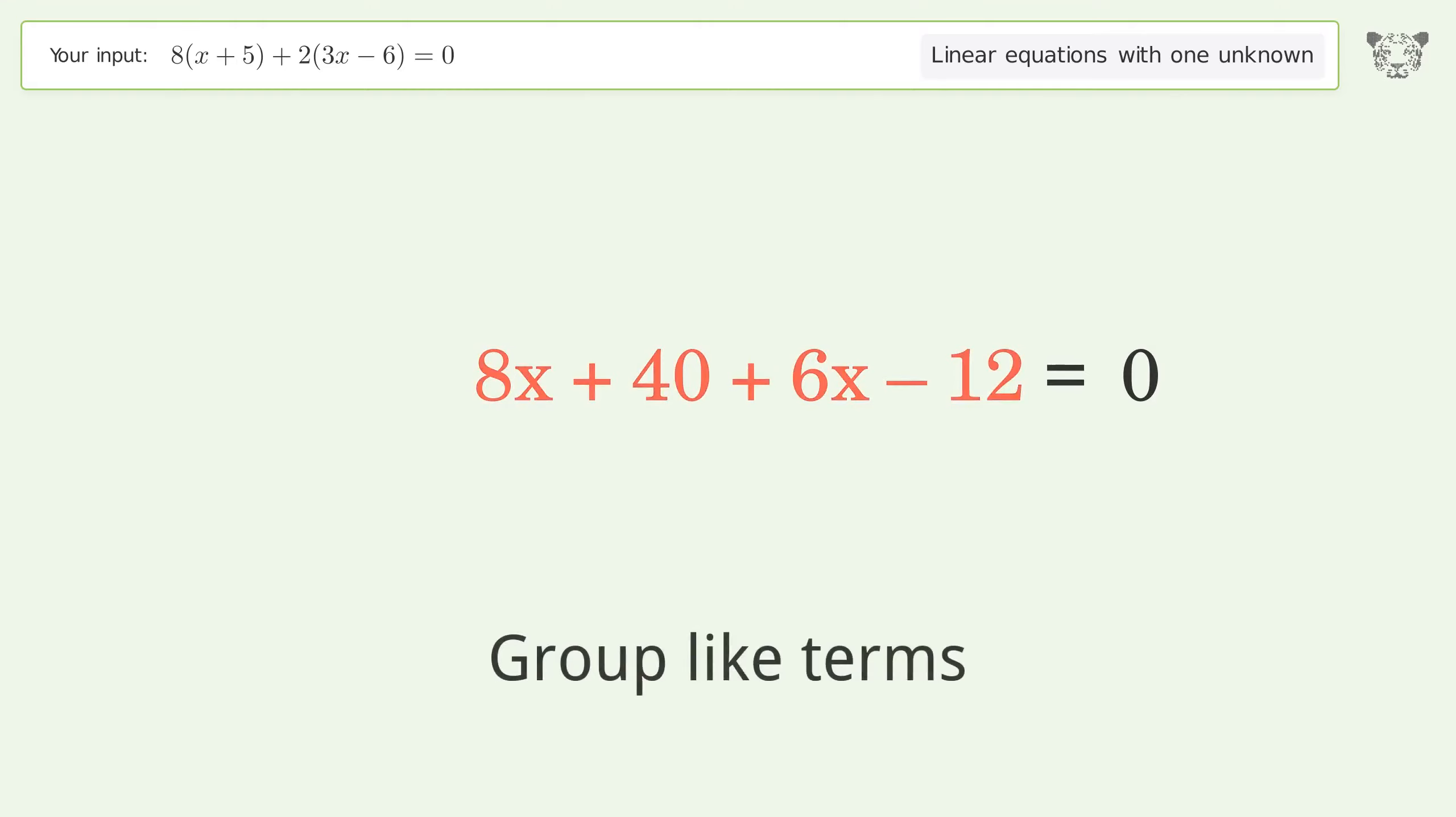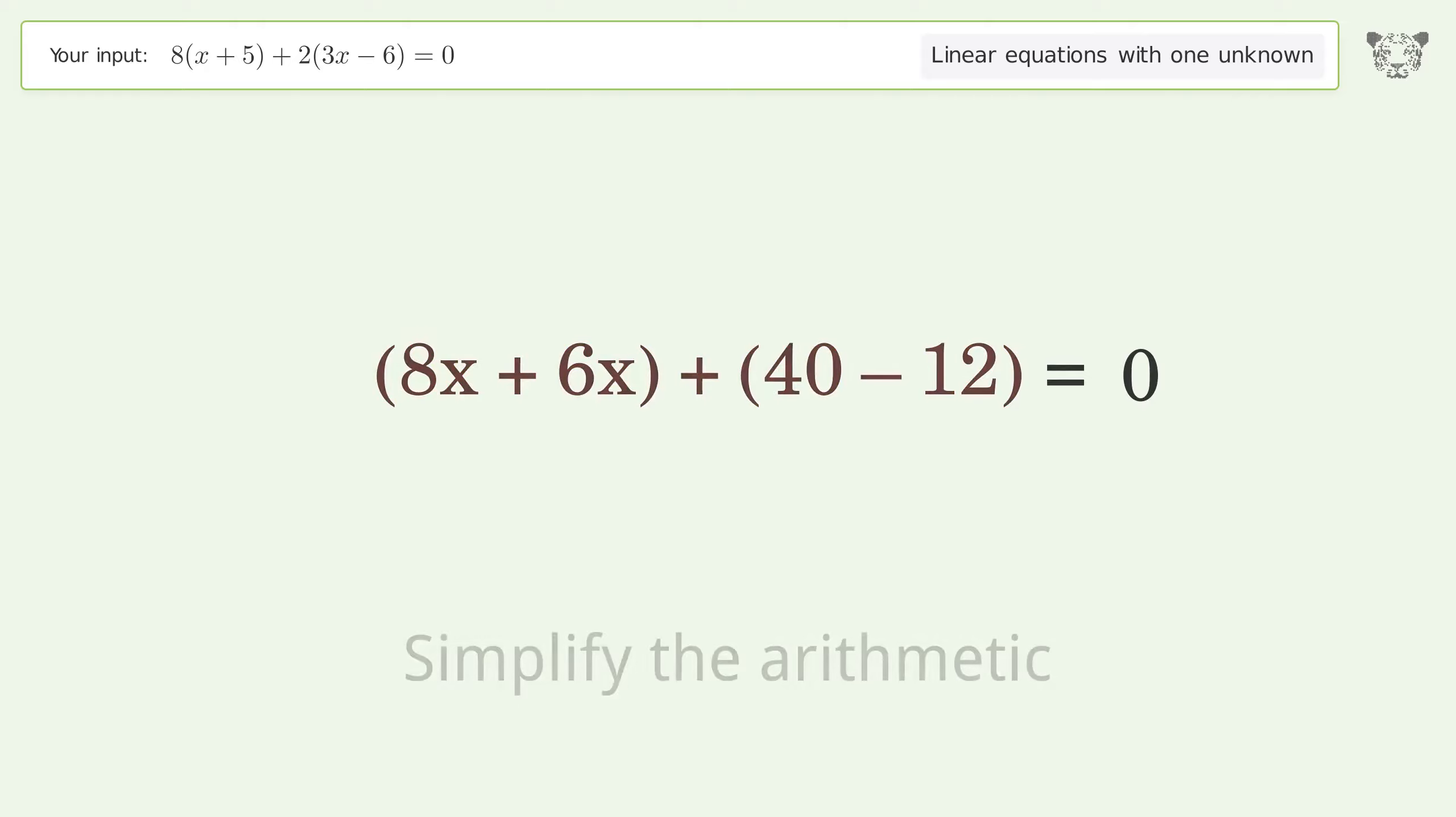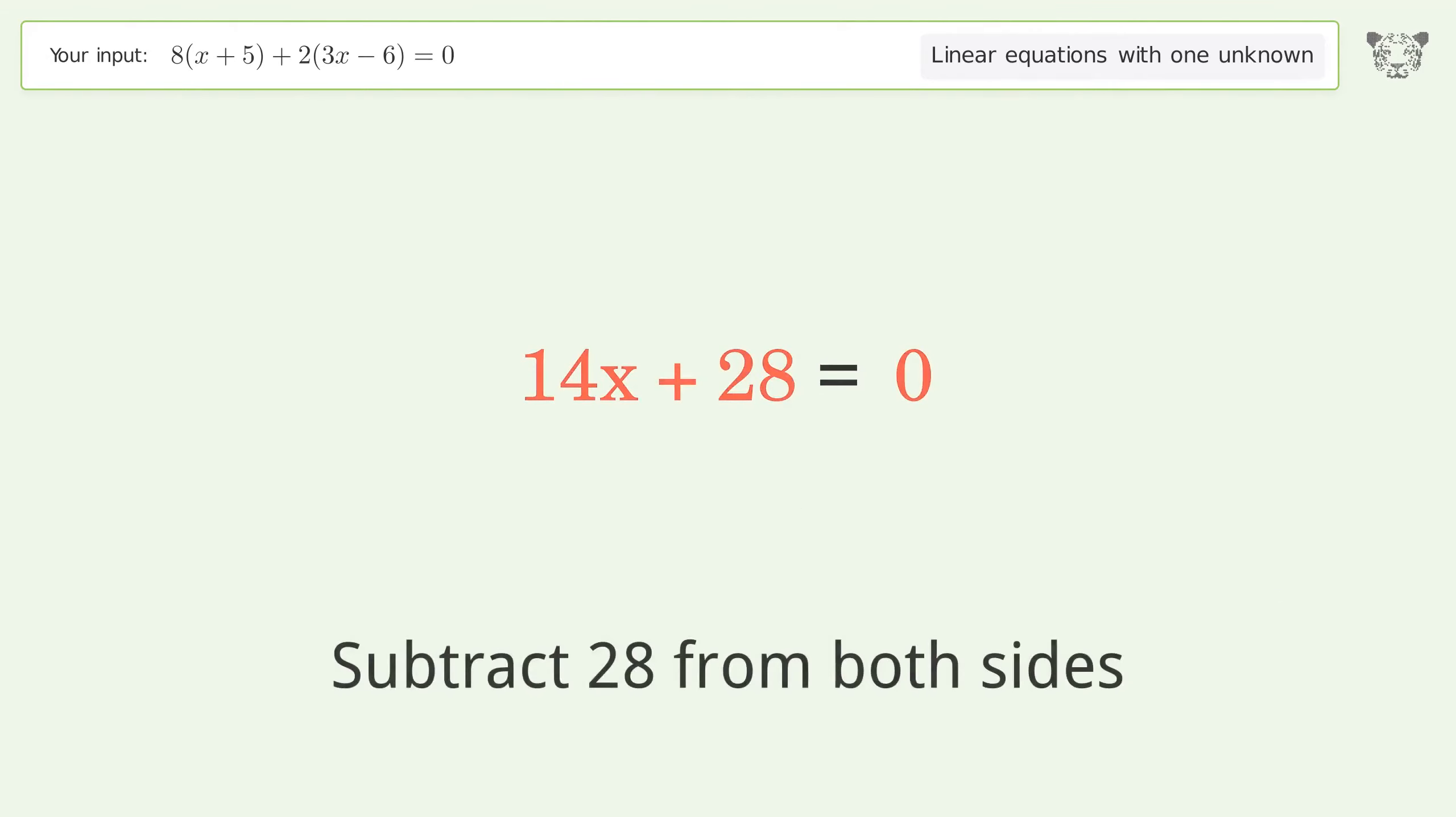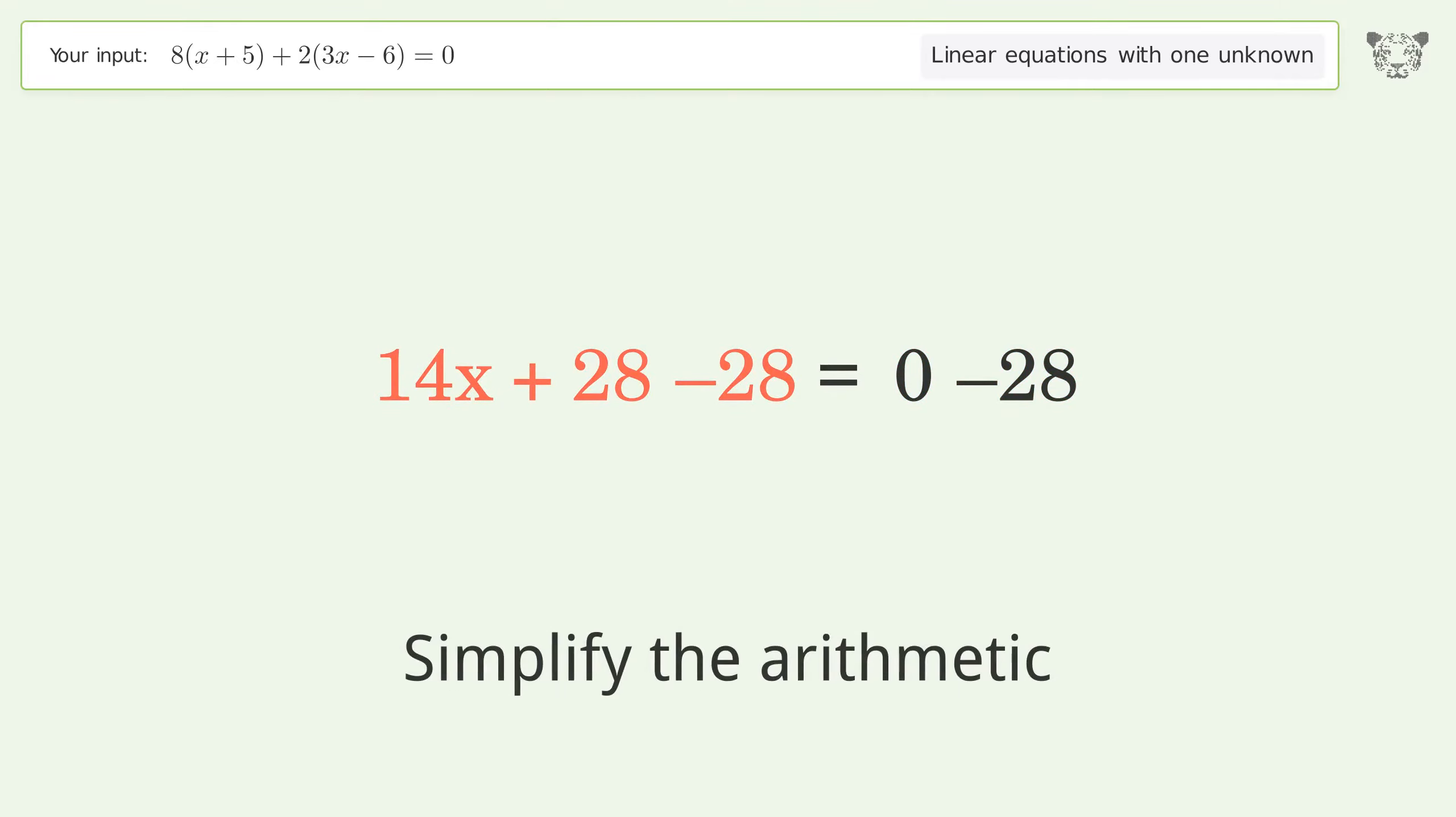Group like terms and simplify the arithmetic. Group all constants on the right side of the equation by subtracting 28 from both sides. Simplify the arithmetic.